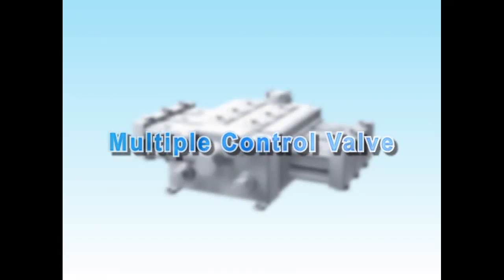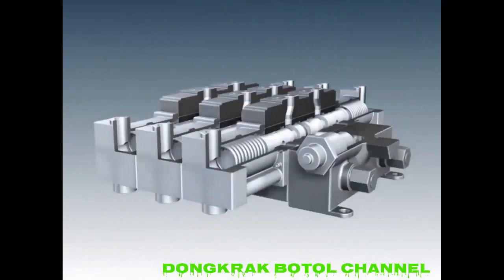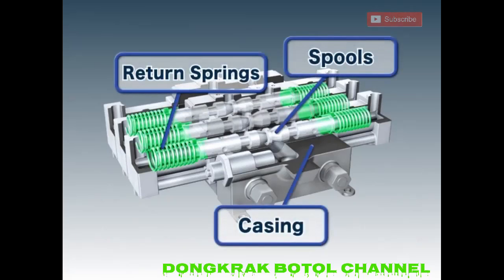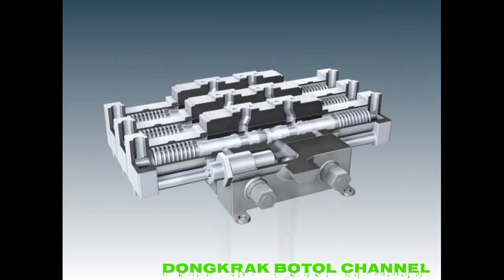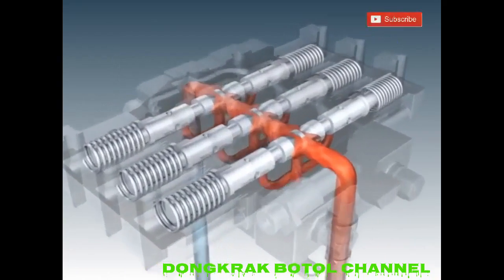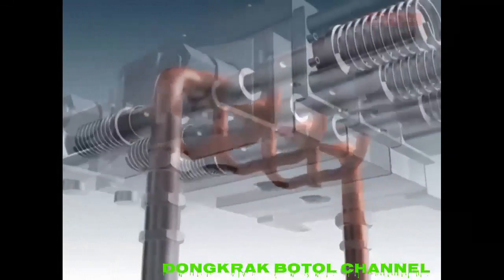The multiple control valve redirects the highly pressurized hydraulic oil from the variable pump using the pilot pressure received from the remote control valve. The valve is composed of a casing, spools which redirect the hydraulic oil, return springs which return the spools to their original positions, and other components. The passages for the hydraulic oil are branched off as so. From within this, hydraulic oil passes through the valve to a port based on the position of the spools.